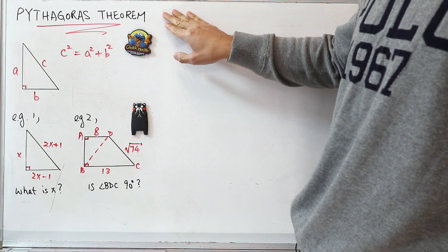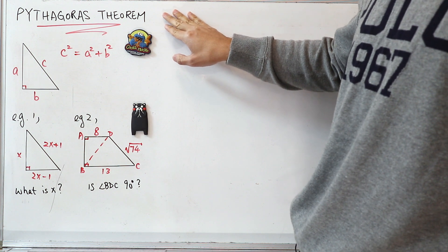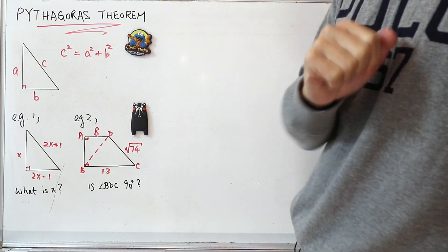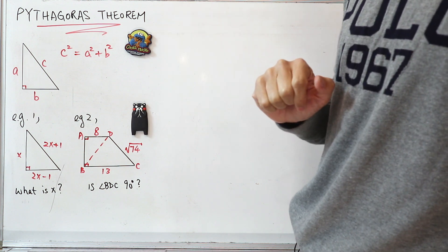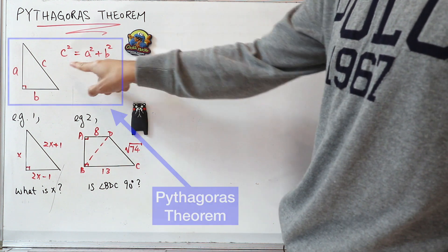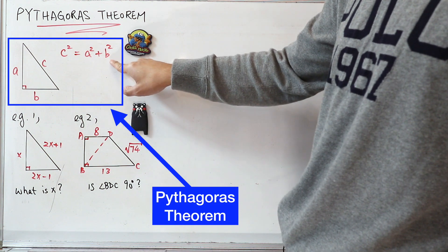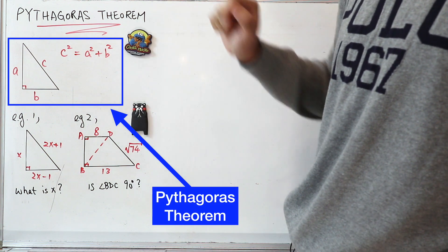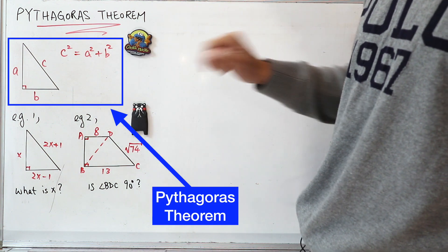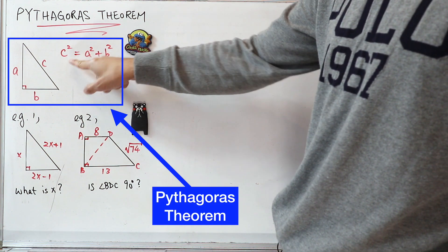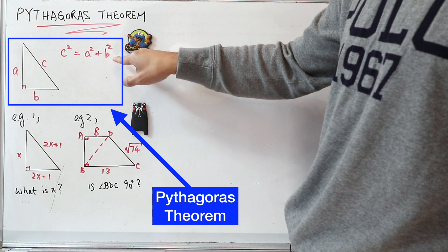Pythagoras Theorem is actually not very complicated. All you have to do is memorize this formula: c squared is equal to a squared plus b squared. But what is c, a, and b?